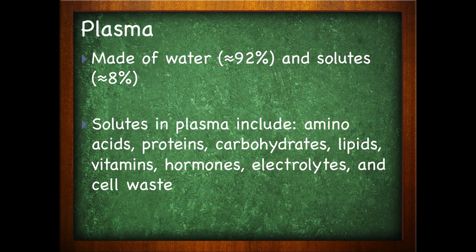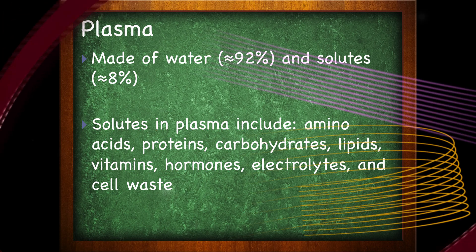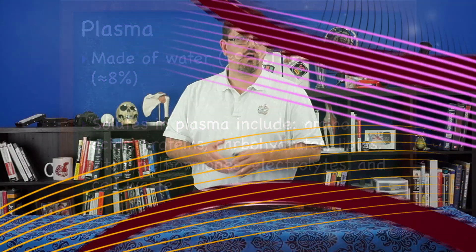The solutes that you can find in plasma include amino acids — remember, these are the building blocks of proteins — proteins, carbohydrates, lipids, vitamins, hormones, electrolytes, and cell wastes. There are three main proteins found within the plasma.